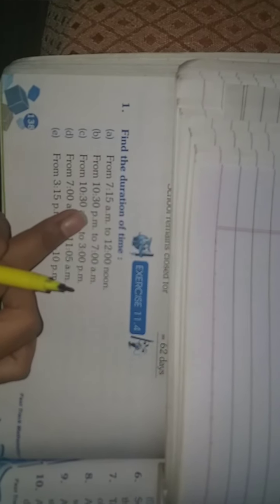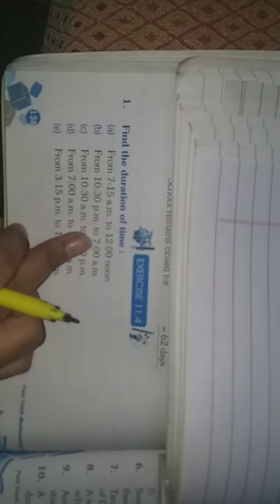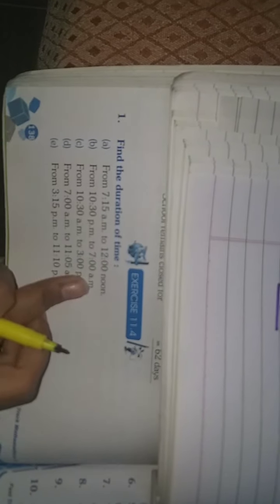Now in your second question, what will you do? From 10:30 p.m. to 7 a.m., first you have to write 10:30 p.m. to 11 p.m., then 11 p.m. to 12 midnight, then 12 midnight to 7 a.m., then plus all hours. Then you have to get your duration of time.